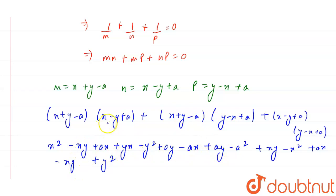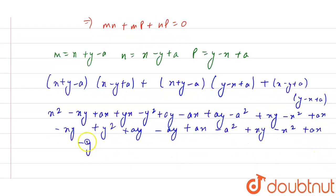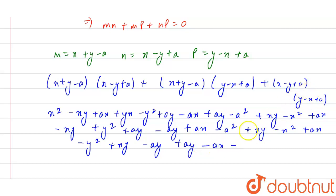From the first group of terms we get: xy, minus x², ax, minus xy, plus y², plus ay, minus ay, plus ax, minus a². From the last term we get: xy, minus x², plus ax, minus y², plus xy, minus ay, plus ay, minus ax, and plus a².